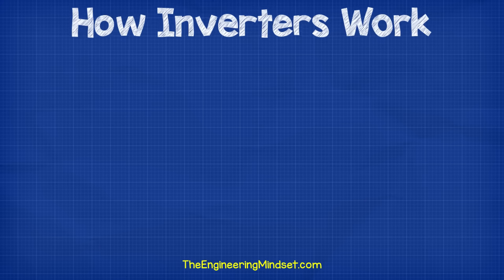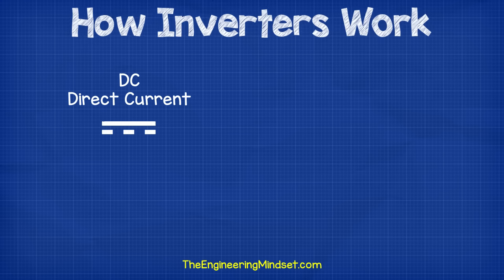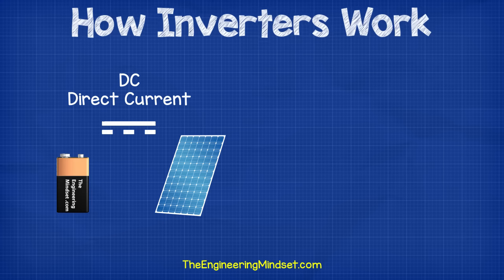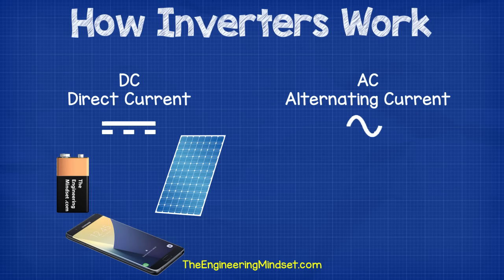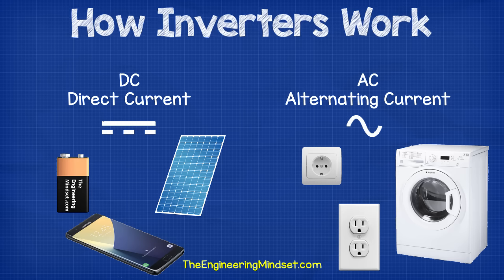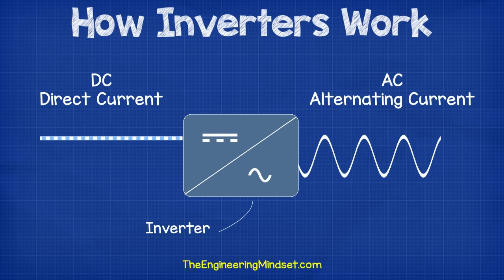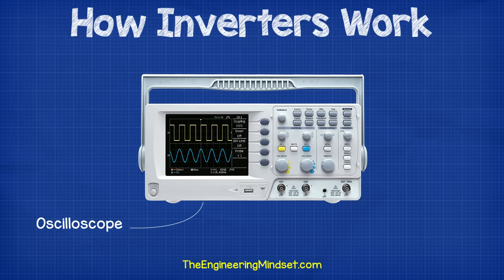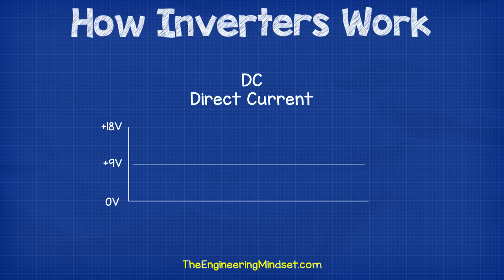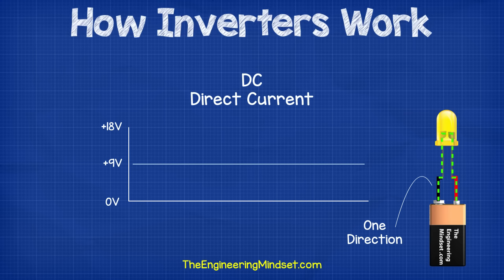So what is an inverter? Let's start at the basics. There are two types of electrical power in use: direct current, or DC for short, which is supplied by batteries and solar panels, and is mainly used by small digital goods with circuit boards. The other type is alternating current, or AC, which is supplied from the power sockets in your home and is typically used to power larger appliances. If you use an oscilloscope to look at these two types of power, you'll see that direct current sits at its maximum voltage in a straight line, because its current flows in only one direction — which is why it's called direct current.